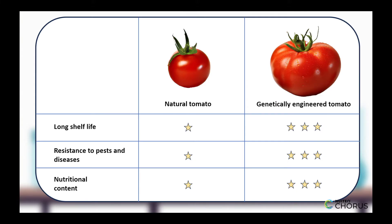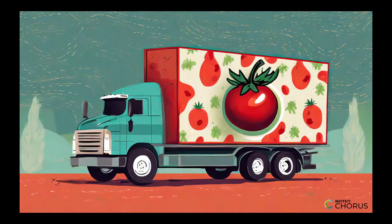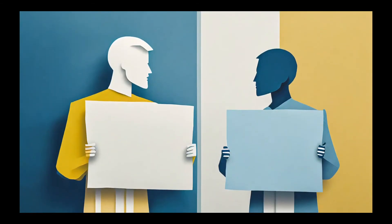These advancements in selective breeding and genetic engineering have had a significant impact on the tomato industry. Tomatoes are now grown on a massive scale, and the industry has become a crucial part of our food supply chain.